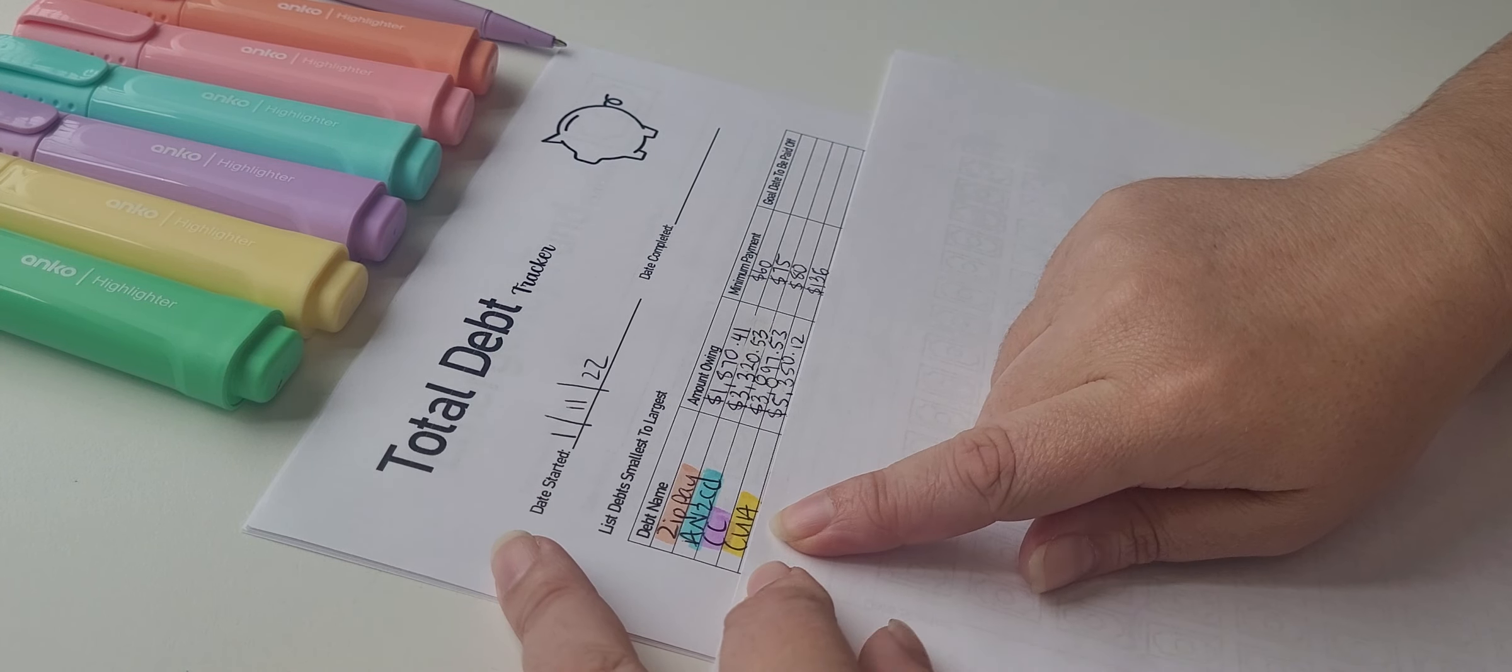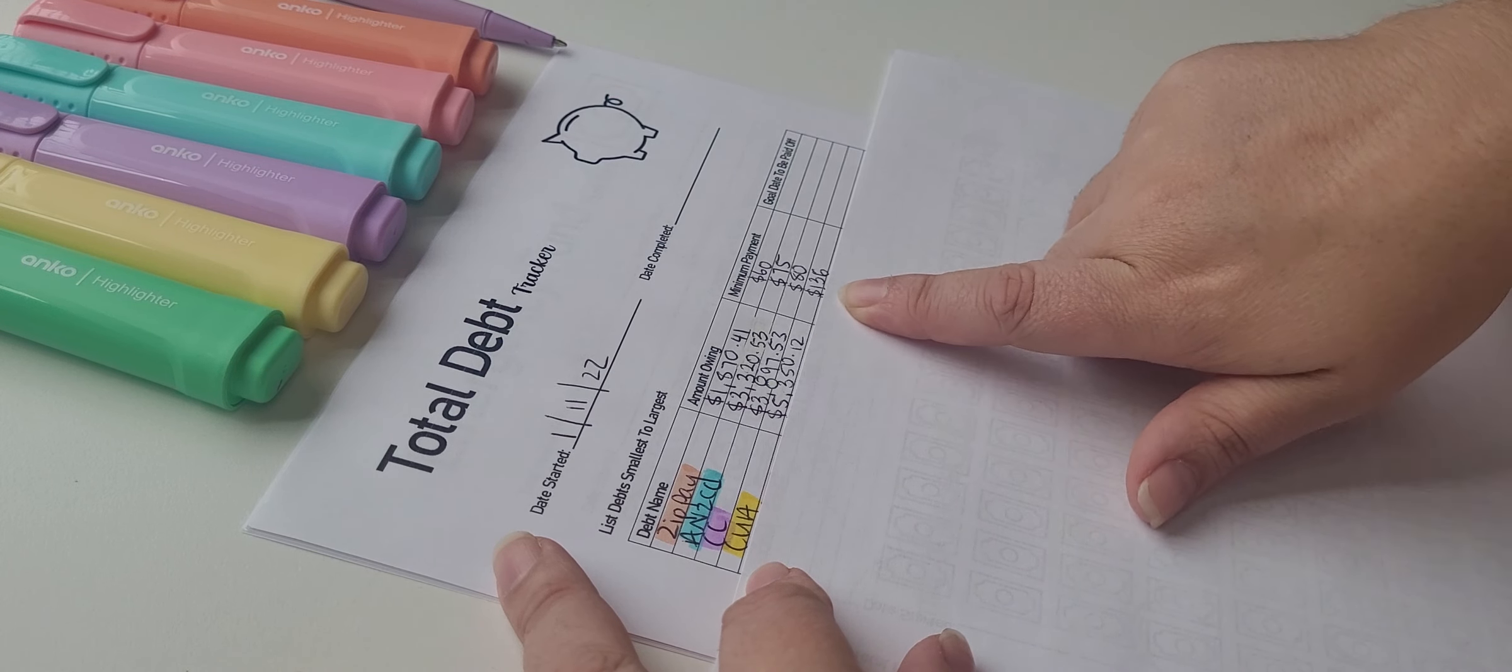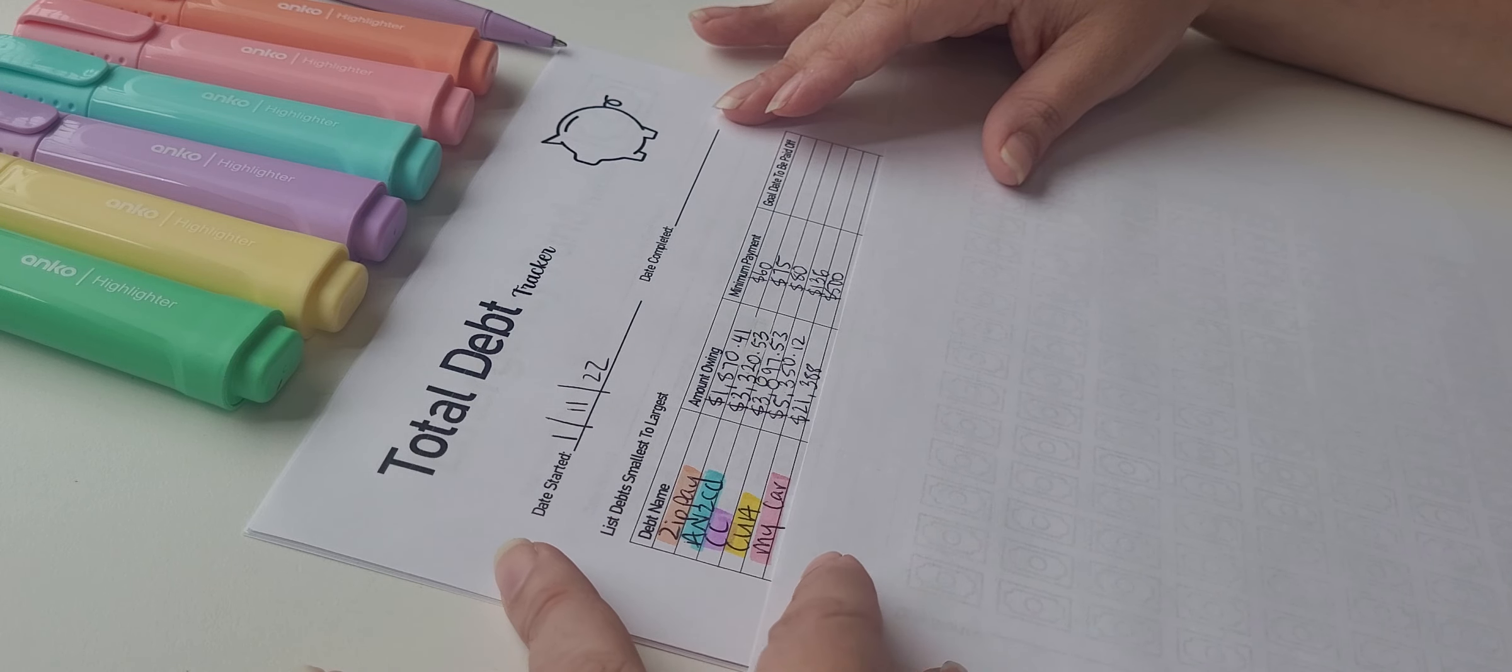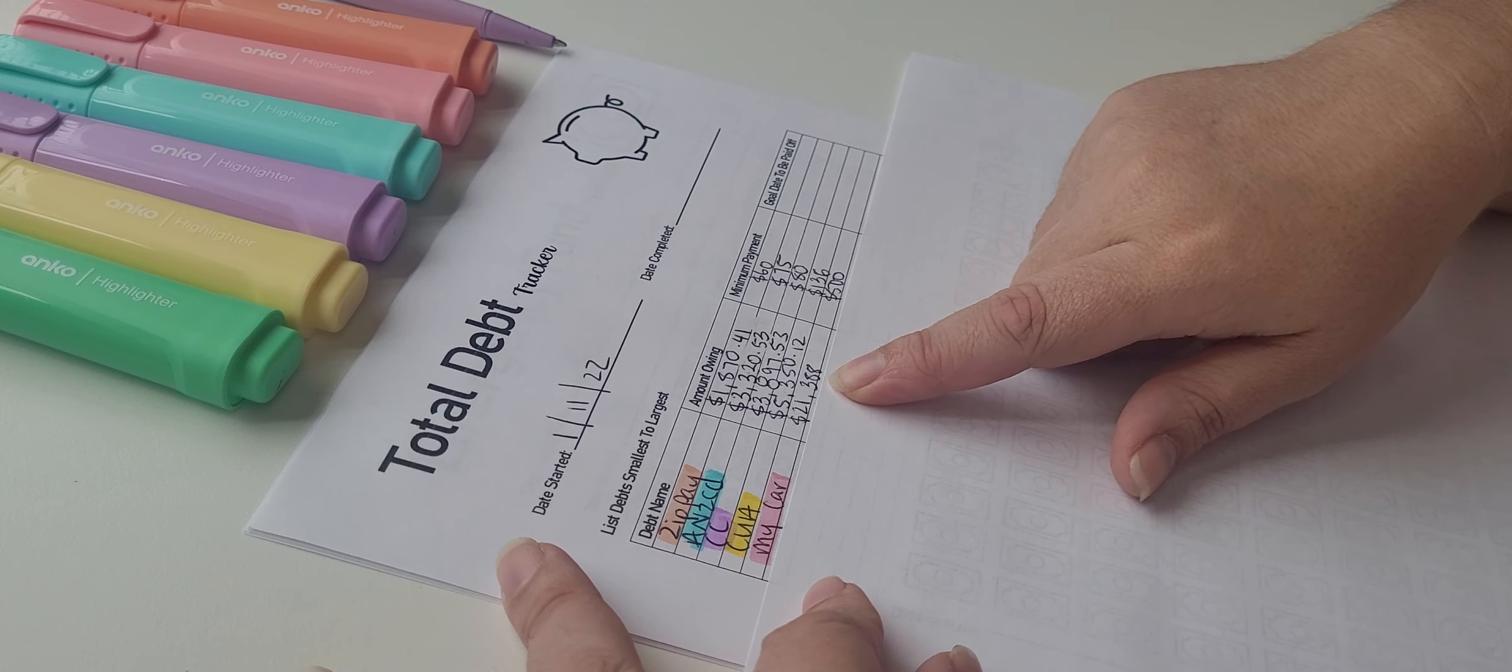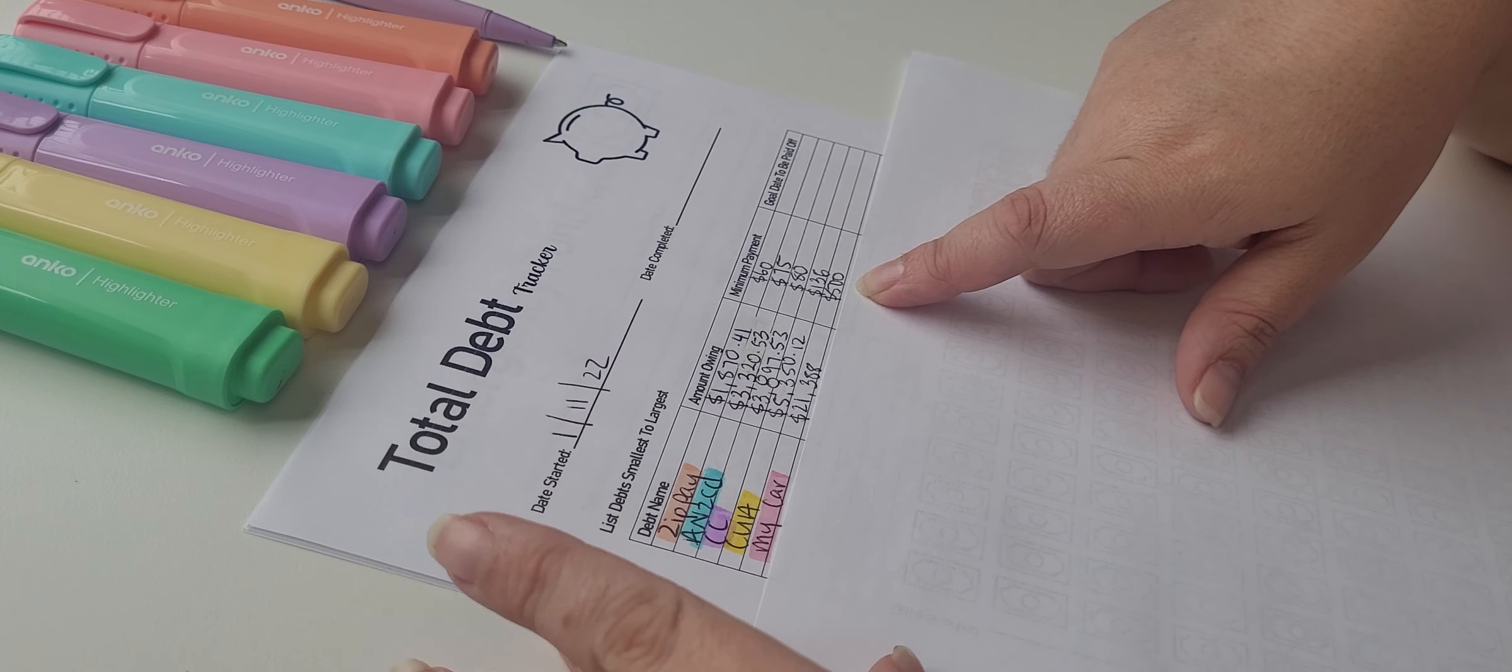CUA is my husband's car, $5,350.12. And the minimum payment is $136 a month. My car, $21,388 minimum payment, $500. I don't pay interest on this one.